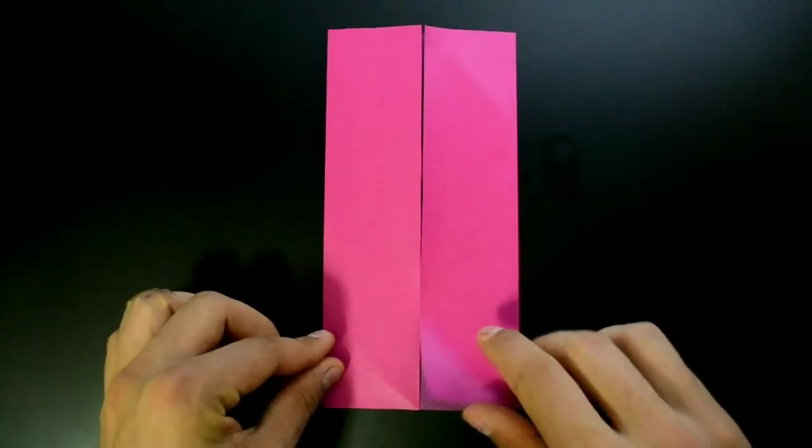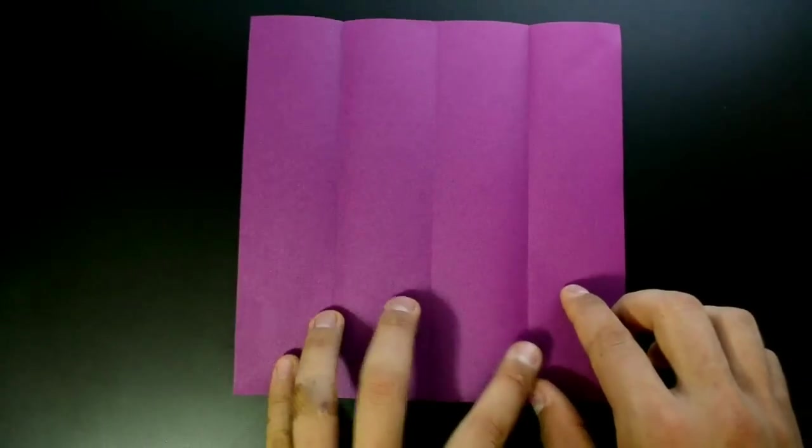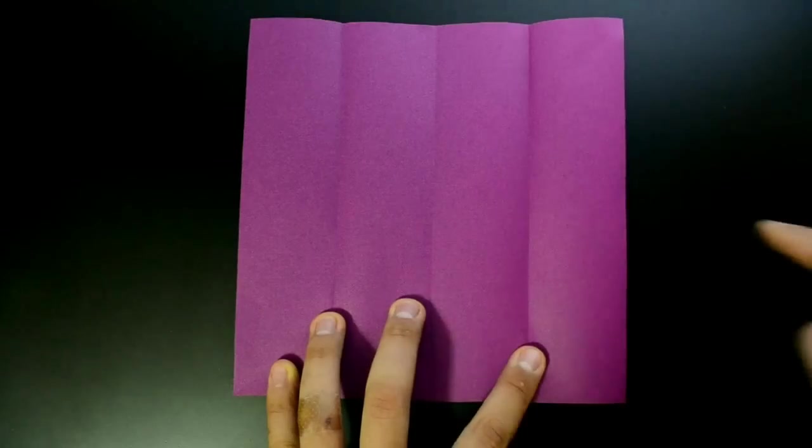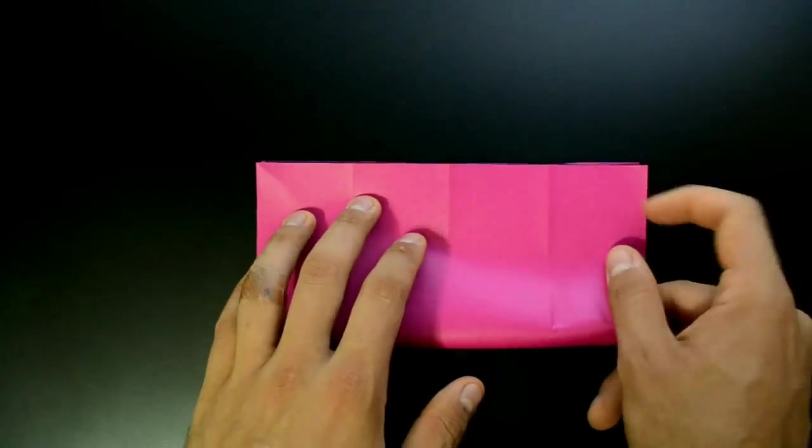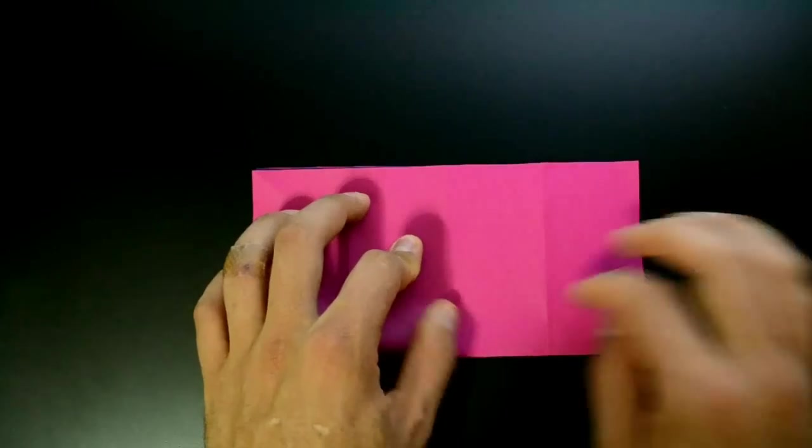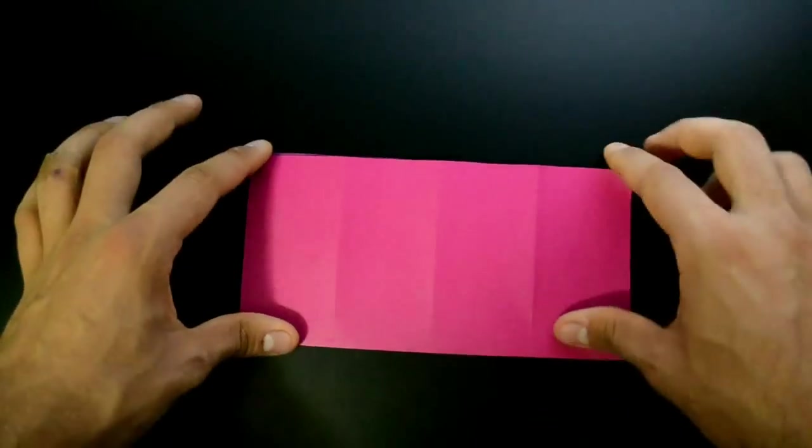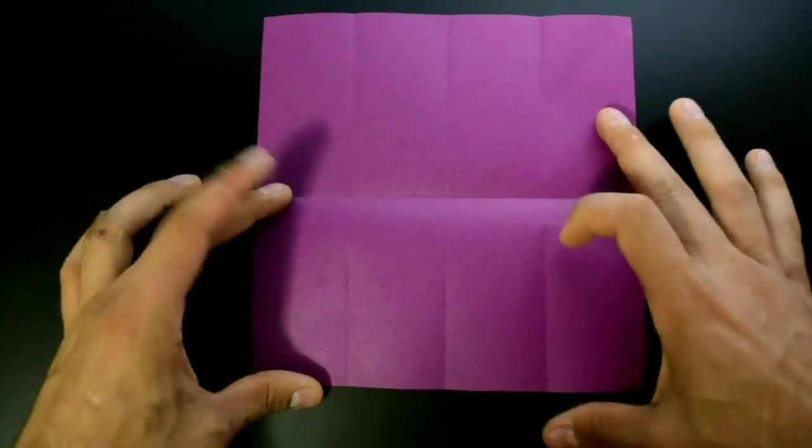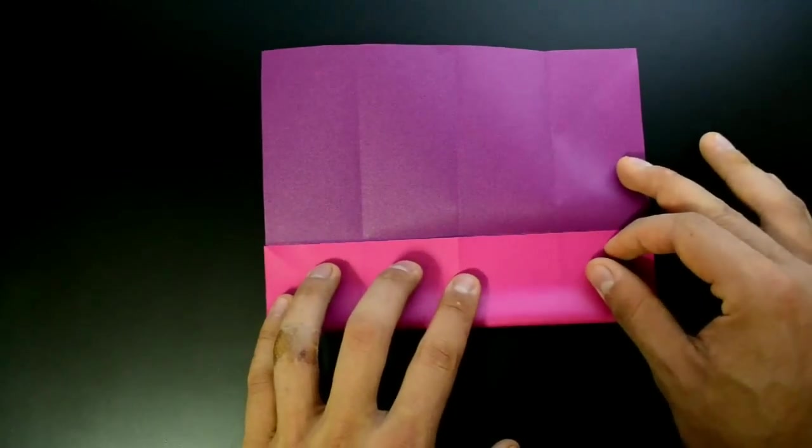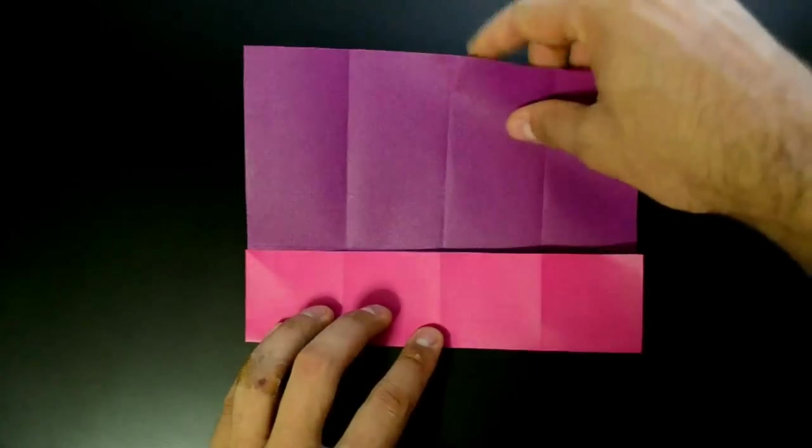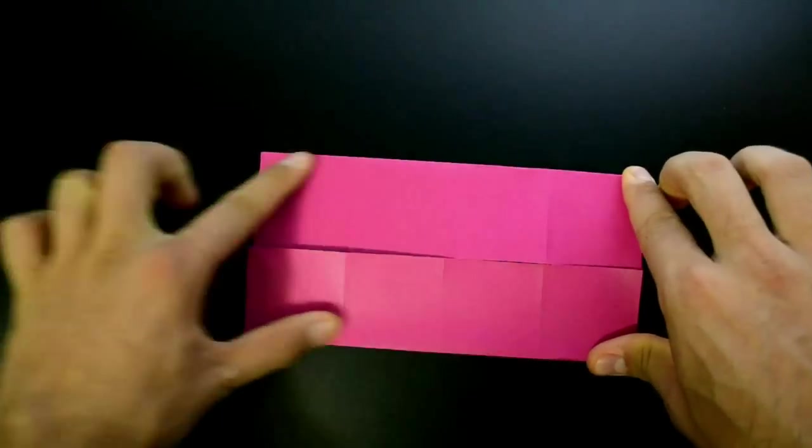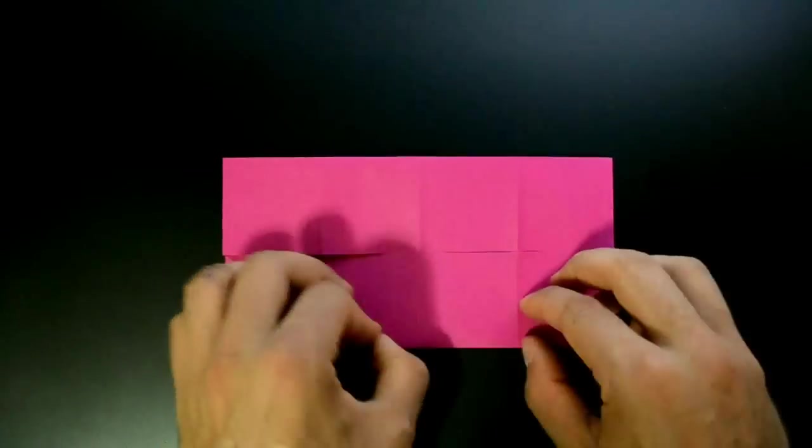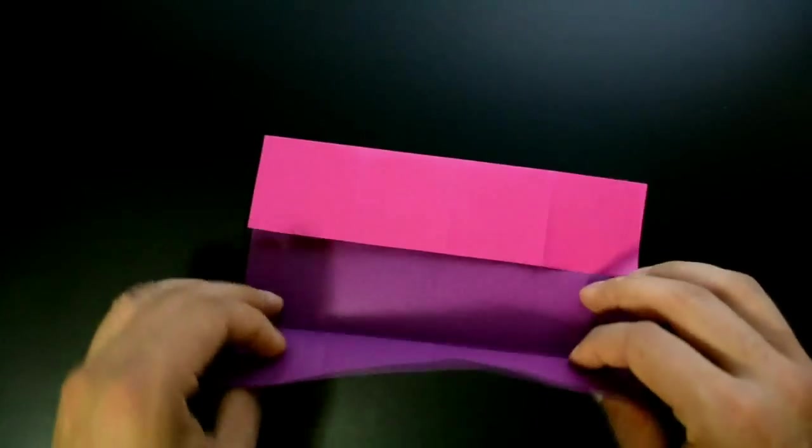Undo this step and repeat exactly the same, now on the horizontal. First folding in half, then the edges to the middle. Right, undo again.